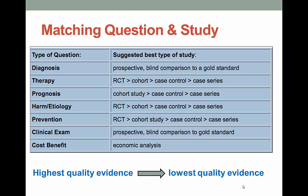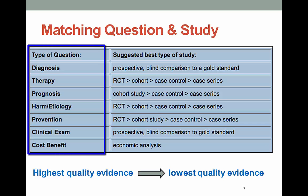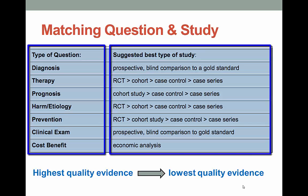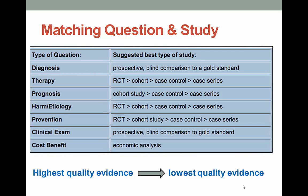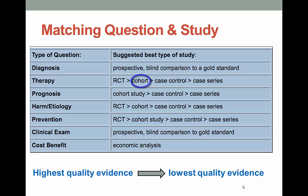Once you know what type of question it is, you can figure out what studies can provide the best evidence. This kind of table is really helpful — question types are on the left and study types on the right. The list starts with the strongest type of study and moves down to research that's not as helpful. For example, most healthcare questions fall in the therapy category and are best answered by randomized control trials. If you can't find any, move down to cohort studies, then case control, and so on.